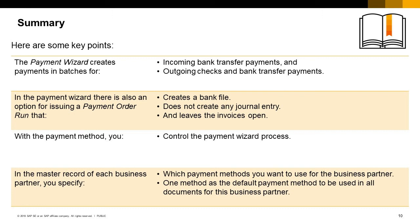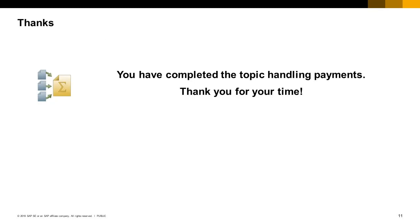Here are some key points to take away. The Payment Wizard creates payments in batches for incoming bank transfer payments, and outgoing checks and bank transfer payments. There is also an option for issuing a payment order run that creates a bank file, does not create any journal entry, and leaves the invoices open. With the payment method, you control the Payment Wizard process. In the master records of each business partner, you specify which payment methods to use and one default payment method to be used in all documents for that business partner. You have completed the topic on handling payments. Thank you for your time.